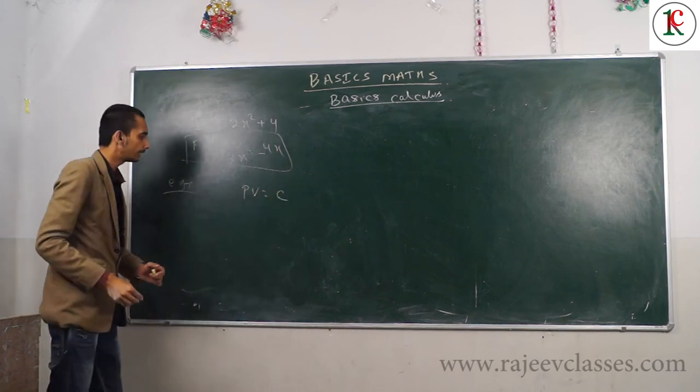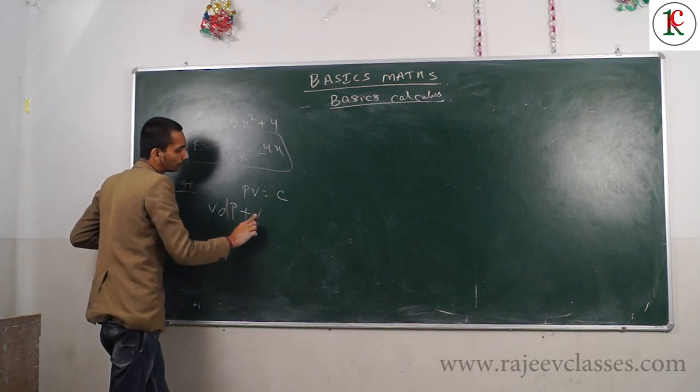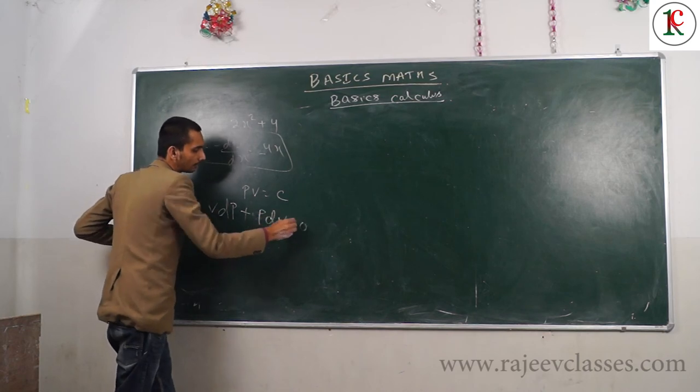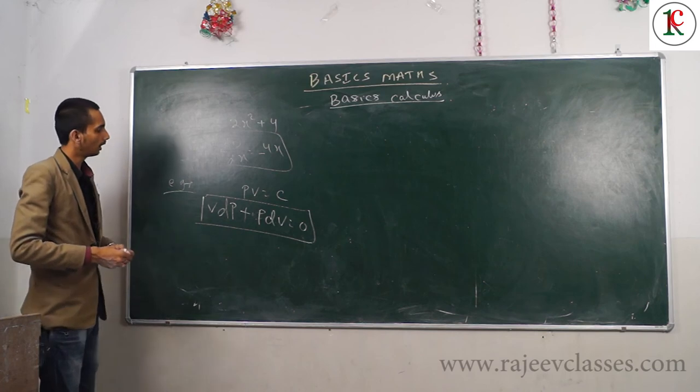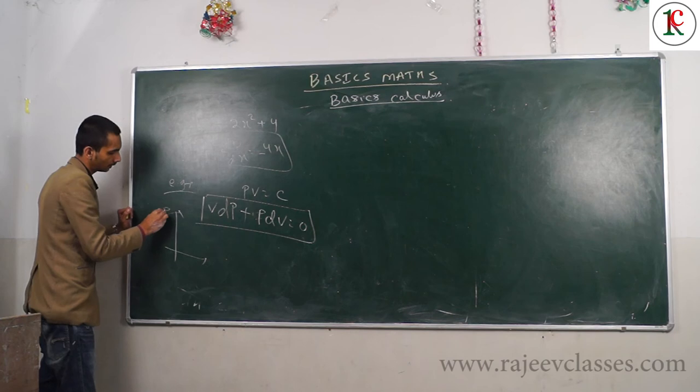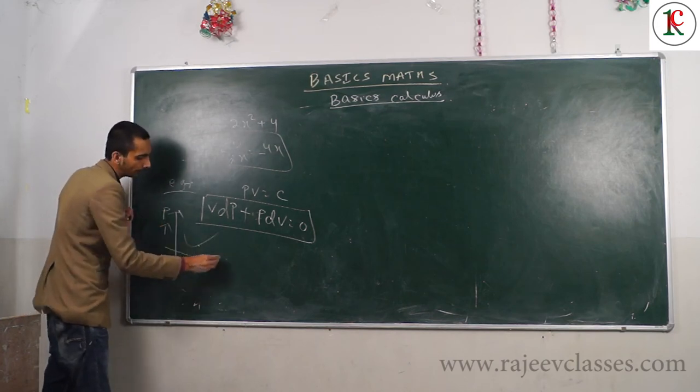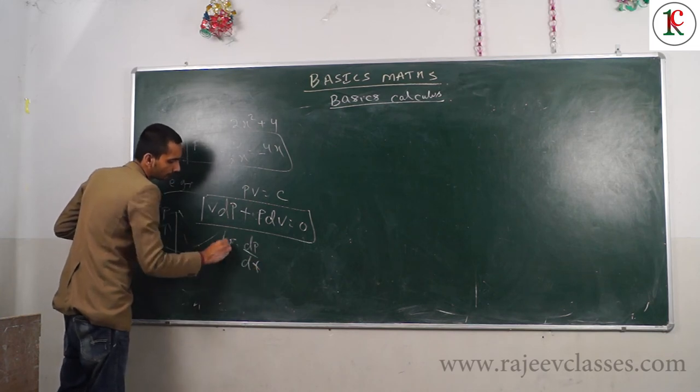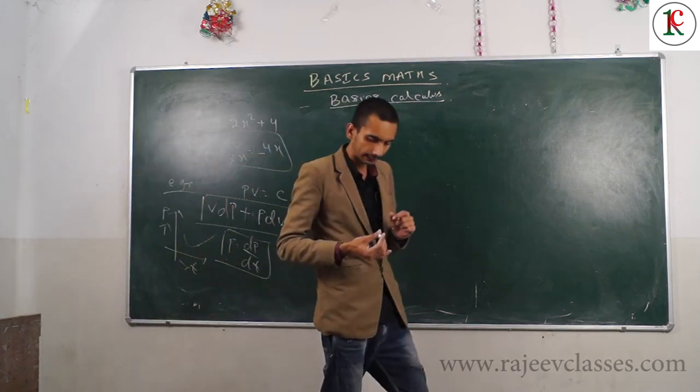When you have a constant and differentiate it, you get zero. If you have a function and differentiate it, you get the derivative. If momentum versus time graph is given, force is calculated as change in momentum divided by time.